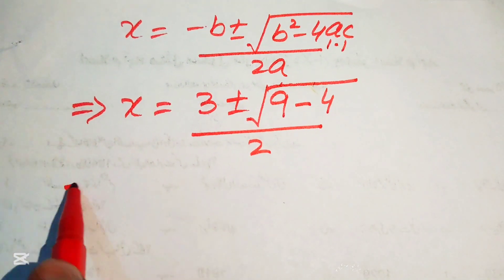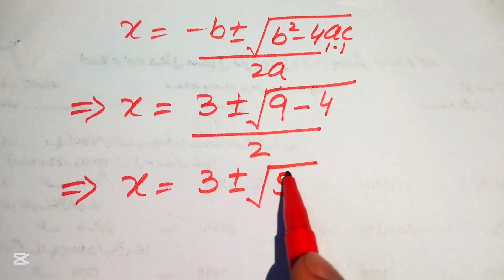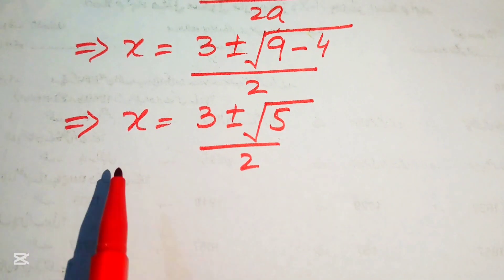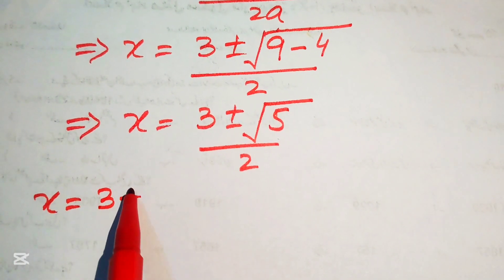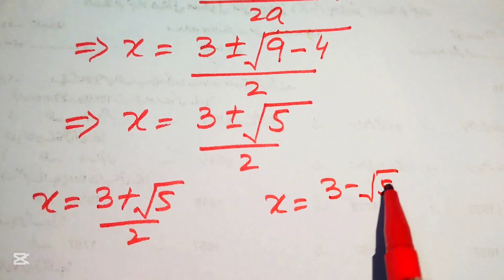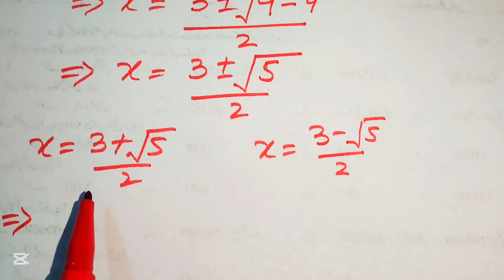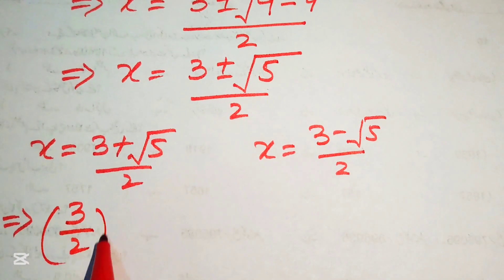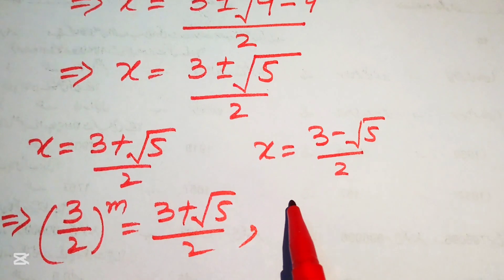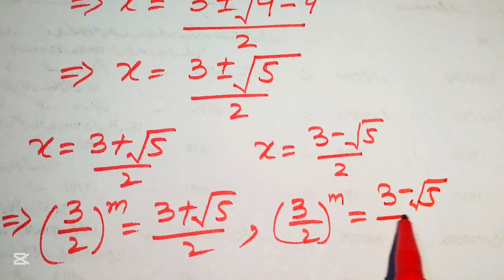So x = (3 + √5)/2 or x = (3 - √5)/2. Back-substituting x = (3/2)^m: Equation 1: (3/2)^m = (3 + √5)/2, and Equation 2: (3/2)^m = (3 - √5)/2.